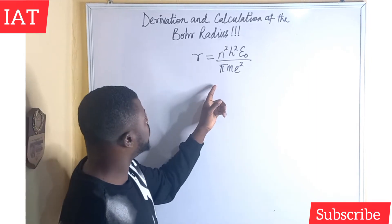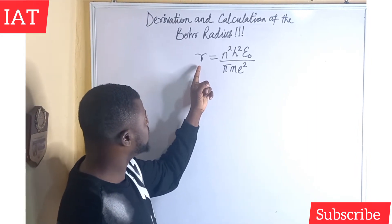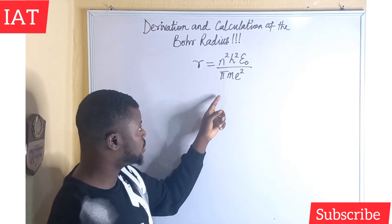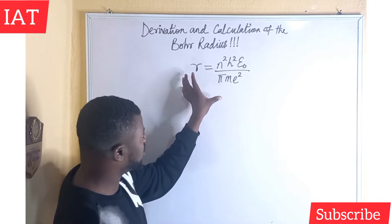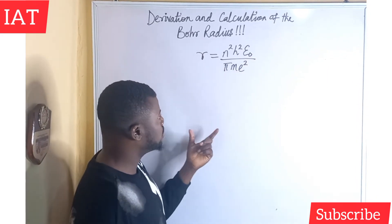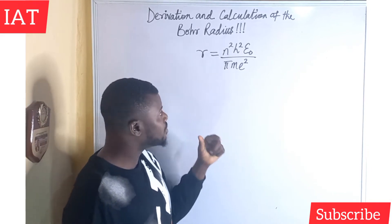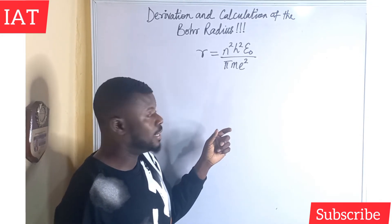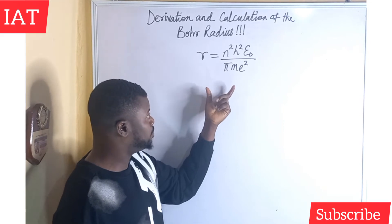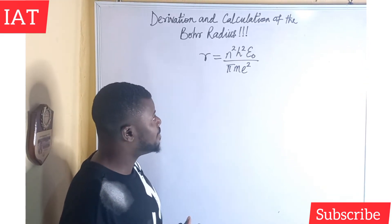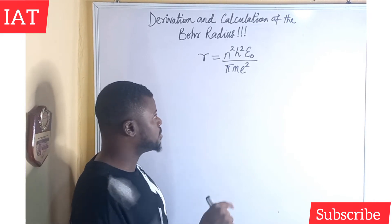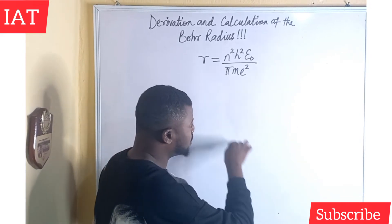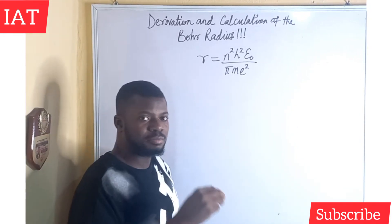Hello and welcome back. In this video I am going to derive the Bohr's radius, which is r equal to n squared h squared epsilon naught all over pi m e squared. This expression comes about from Bohr retaining the model of Rutherford, and then postulating that the electron revolves around a circular orbit.